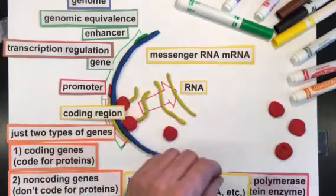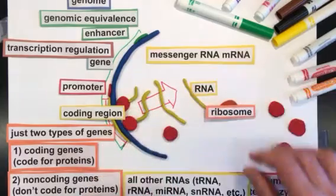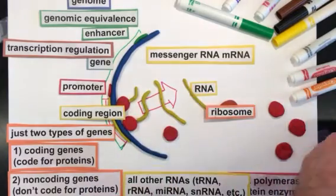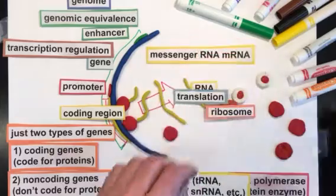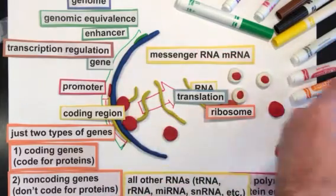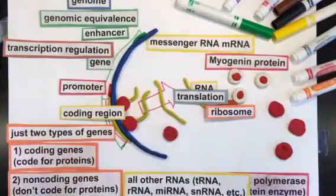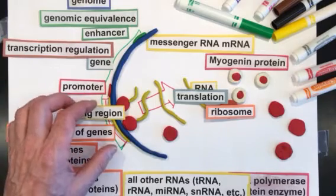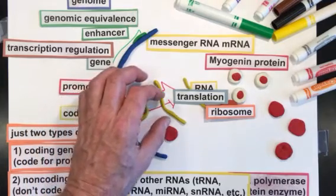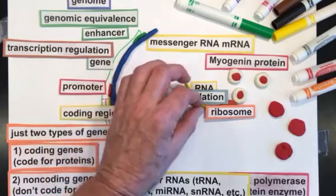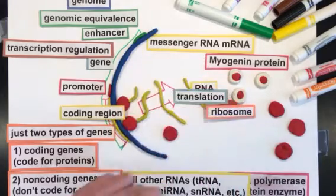That work is going to be done using the RNA and an enzyme called the ribosome. Through a process of translation, the ribosome is going to use the RNA to synthesize proteins — in this case, the myogenin protein that is talked about in some of the other videos. So, using the myogenin gene, when the time is right during muscle differentiation, the RNA polymerase binds and transcribes the DNA into RNA. That's then translated using the coding region of the RNA into myogenin proteins.